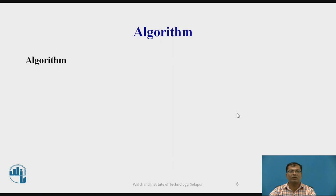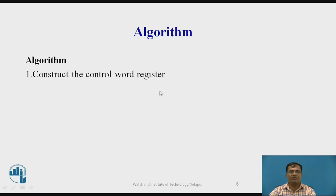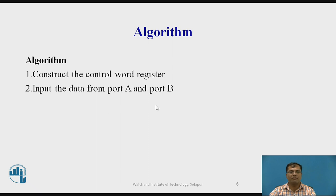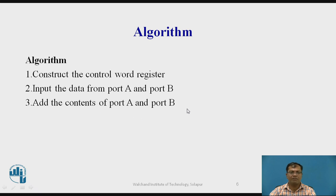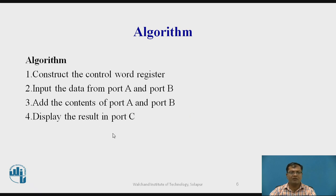Let us see the algorithm. First, construct the control word register — that we have already done. Next, take the input data from Port A and Port B. After taking input, add the content of Port A and Port B. After addition, send the result to Port C. These are the four steps to follow while writing the program.